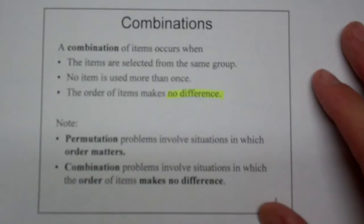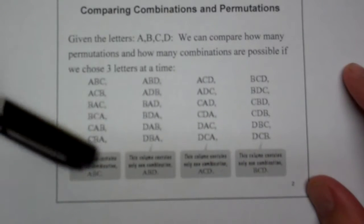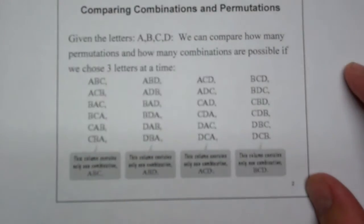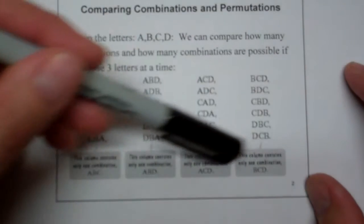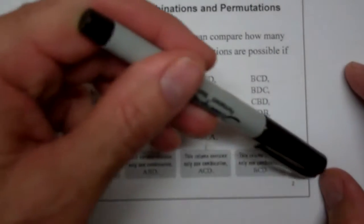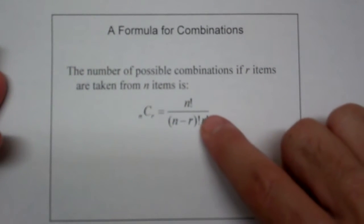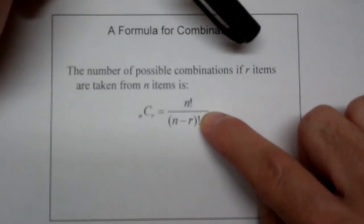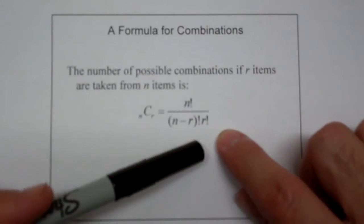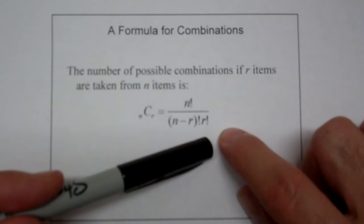So how do we take care of this in formula form? How do I get from a permutation with all of these possibilities down to a combination that only has these four possibilities? I need to divide the bigger group where order does matter into the smaller group where order doesn't matter. And it turns out that's exactly what we're going to do — divide our permutation formula, n factorial over (n minus r) factorial, by the number of items to get rid of that rank ordering factor. So you have an additional r factorial in the denominator that makes it smaller.